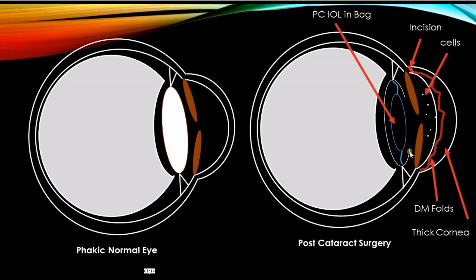It is important to understand that the first thing that happens after you enter the eye is that you produce inflammation. The blood-aqueous barrier — the ciliary body where the pars plicata is — tends to get inflamed and produces cells leaking from it. The cells which typically leak are neutrophils or white blood cells, along with proteins.